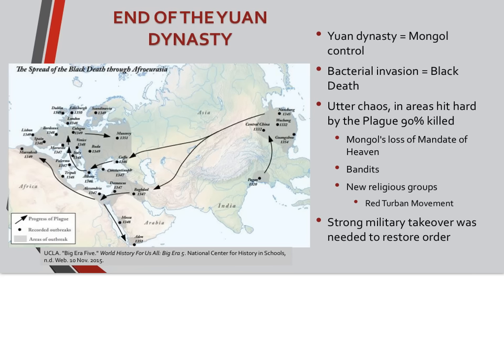Due to this, the Mongols lost the Mandate of Heaven — the concept beginning with the Zhou dynasty that legitimized dynasties. If you were not doing a good job, the Mandate of Heaven held that you would be replaced. Several bandit groups formed, and one religious group formed in opposition to Mongol rule was the Red Turban Movement. They'll be important in a few more slides. There was a need for a strong military takeover, which was about to occur.